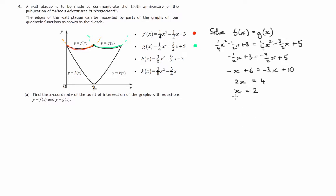So that's our answer to part A. Now let's have a look at part B. The graphs of f(x) and h(x) intersect on the y-axis. The plaque has a vertical line of symmetry, which we now know has equation x equals 2.